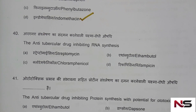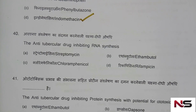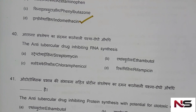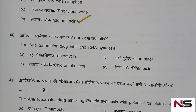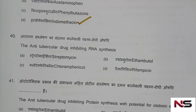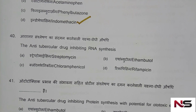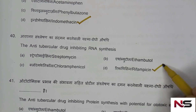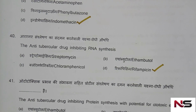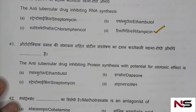Question 40: Anti-tubercular drug inhibiting RNA synthesis. Options are: streptomycin, ethambutol, chloramphenicol, rifampicin. The correct answer is option D — rifampicin inhibits RNA synthesis; that is the mechanism of action of rifampicin.